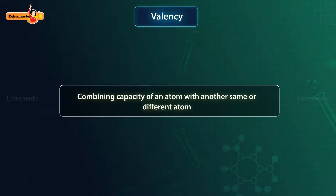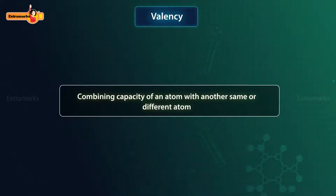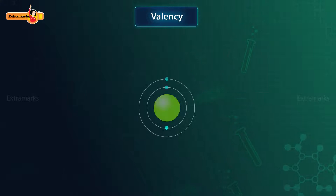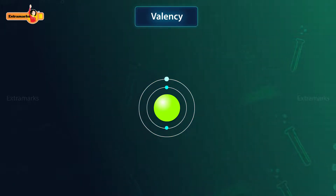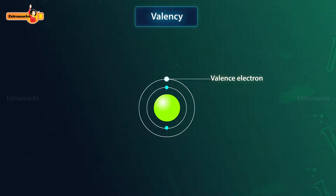Valency is defined as the combining capacity of an atom with another same or different atom. Electrons in an atom are arranged in definite shells. The electrons present in the outermost shell of an atom are called valence electrons, and these electrons determine the valency of the atom.